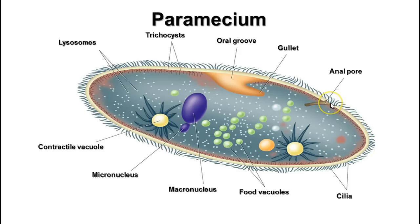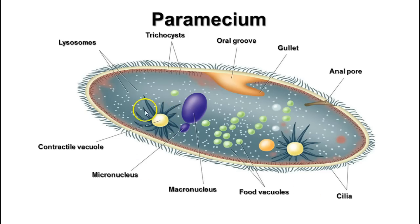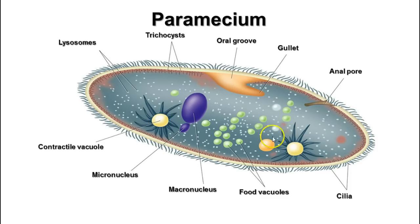The anal pore is a place where indigestible materials can be ejected from the cell. Paramecia and many other protozoa have contractile vacuoles. Since they live in water, they often take on excess water, and a contractile vacuole collects that excess water and expels it—once it fills up, it contracts quickly and squeezes out the water, then collects again. Ciliates often have feeder arms that feed water into the contractile vacuole, and paramecia usually have two contractile vacuoles, one at each end.